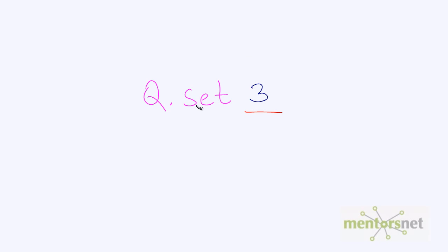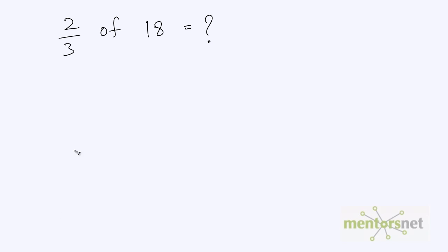Hi guys, let us solve some questions on simplification in this question set. But before we go ahead, let us learn some terminology. Sometimes there are questions which have this thing. If in a question there is something 'of' something, it literally means the product of those two numbers.